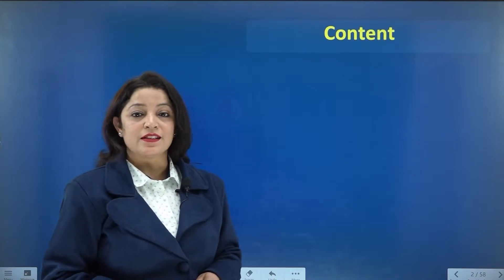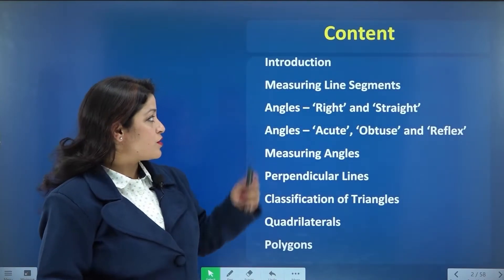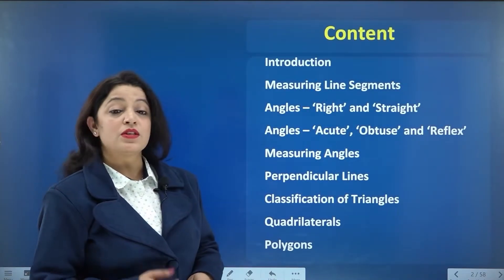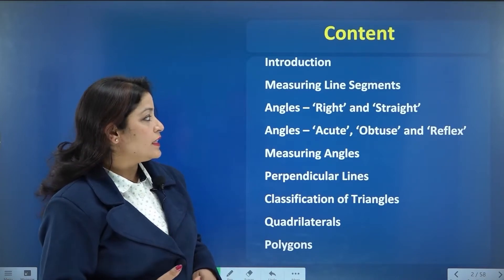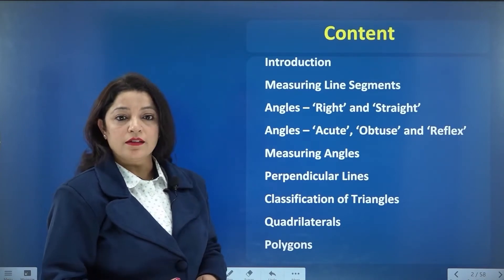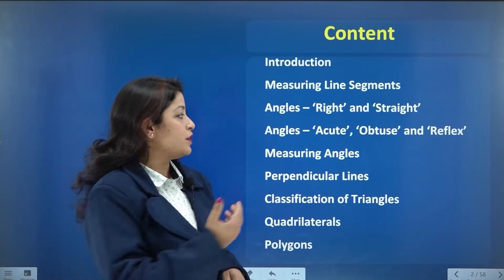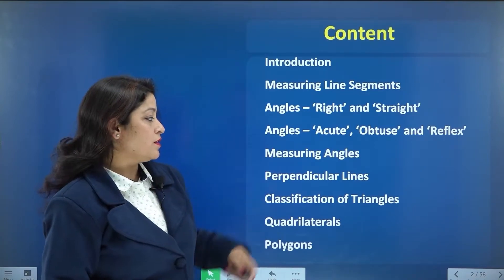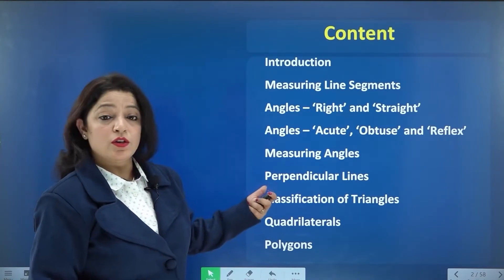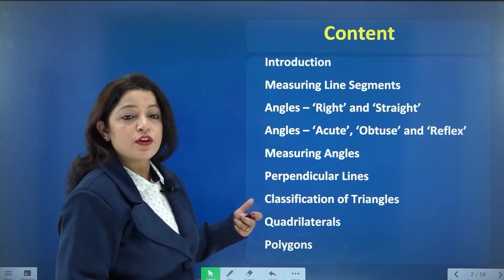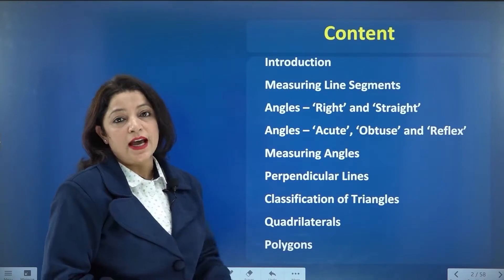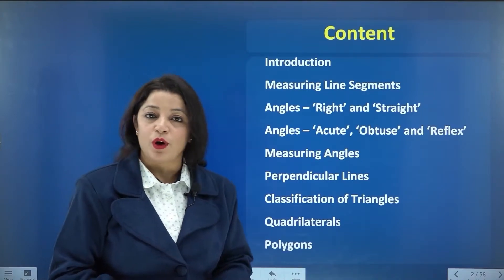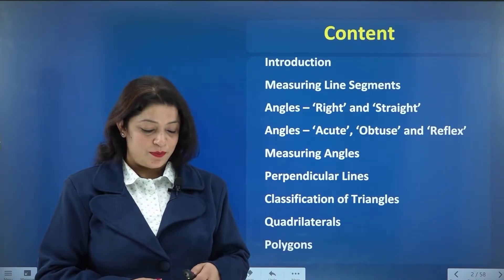Here are the highlights of what we will be including in this chapter: first we will go with the introduction, then measuring line segments, right and straight angles, then acute, obtuse and reflex angles, then measuring angles, perpendicular lines, classification of triangles, quadrilaterals, and we will include polygons in the following chapter.